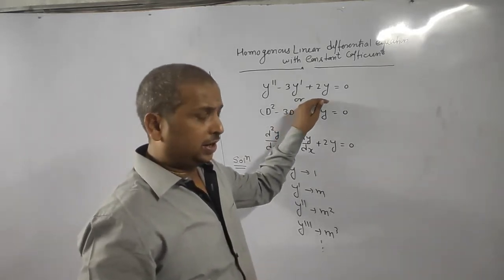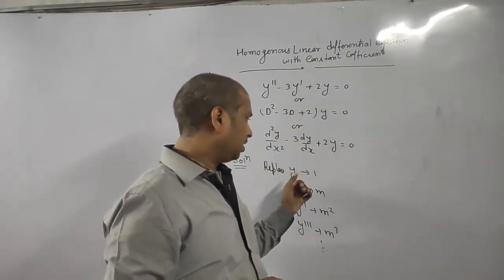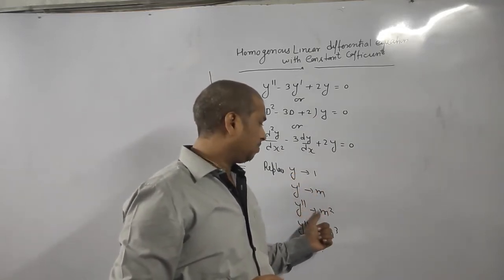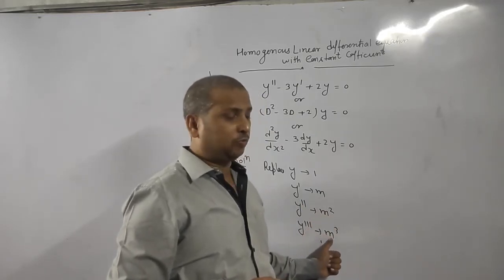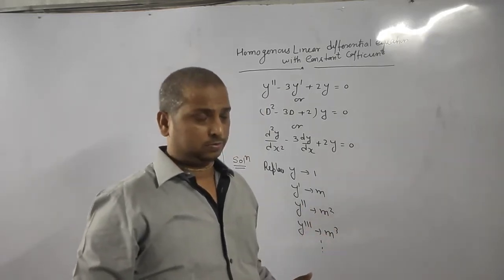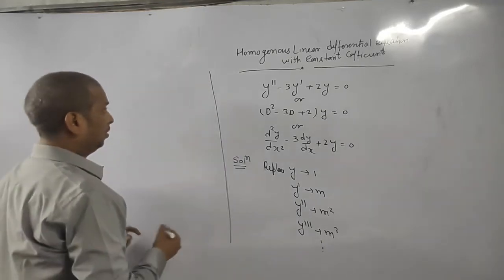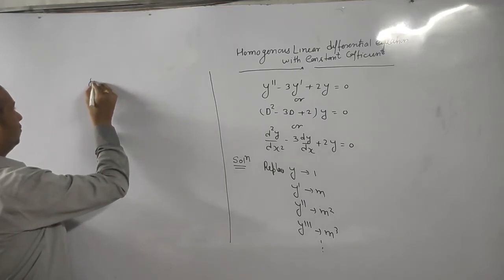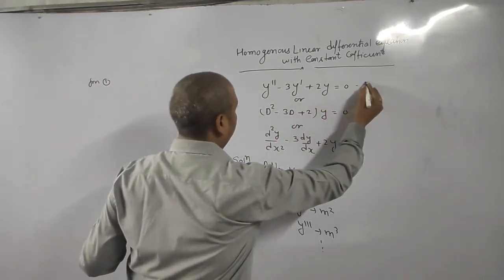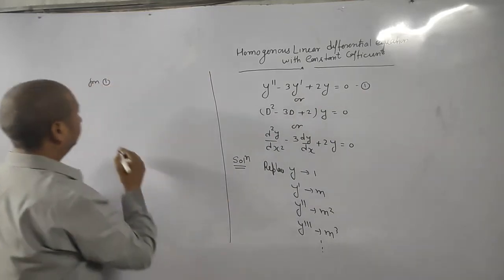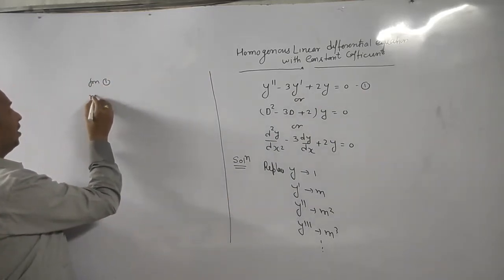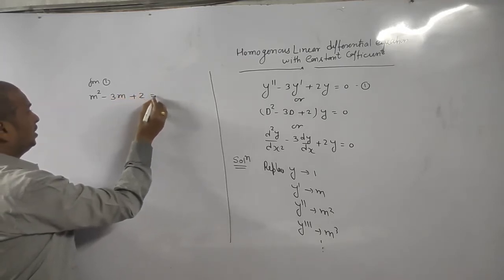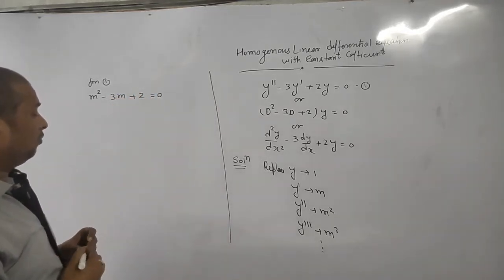Whatever equation given, just replace y by 1, y dash by m, y double dash by m square. Then we get m square minus 3m plus 2 is equal to 0. Here we got this one.